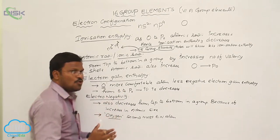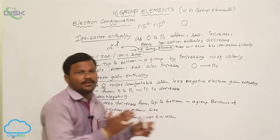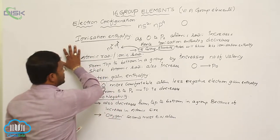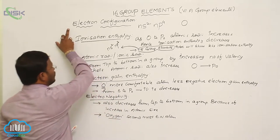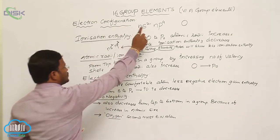Atomic size hence will show more electronegativity. This is electron configuration that is NS2NP4.